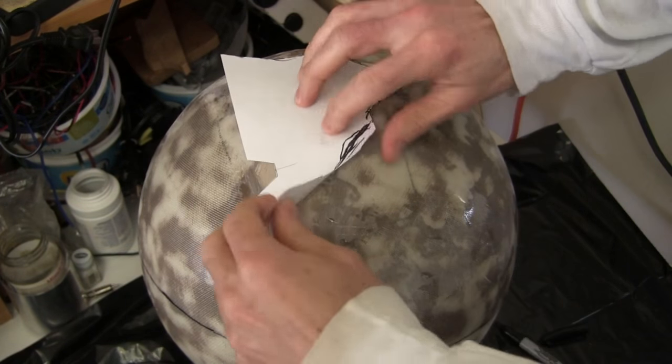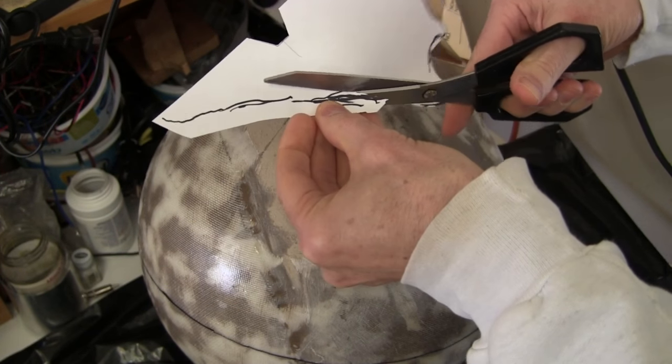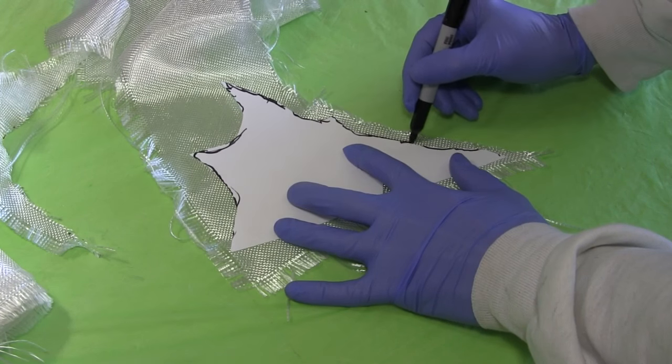Eventually I get to odd shaped areas, like the poles of my globe. So I prepare a paper template and then transfer that to the fiberglass.